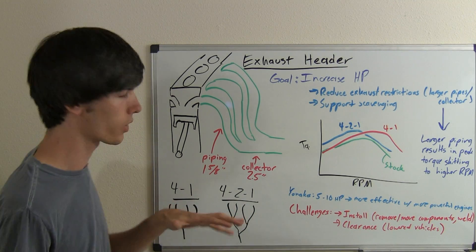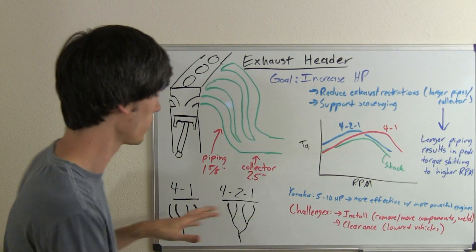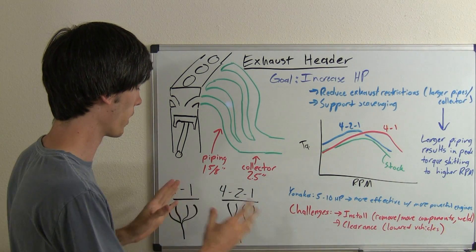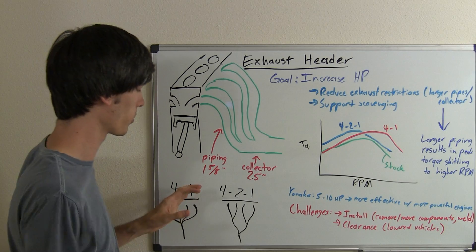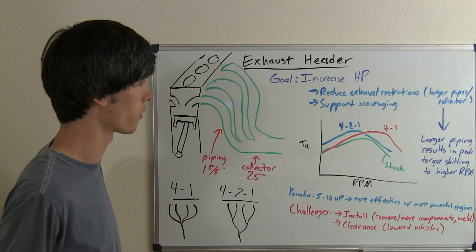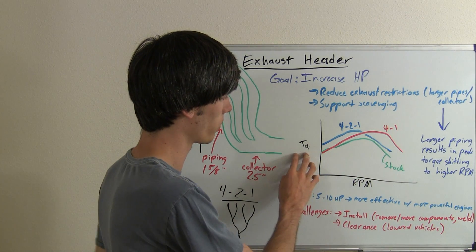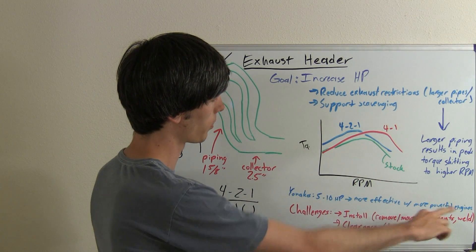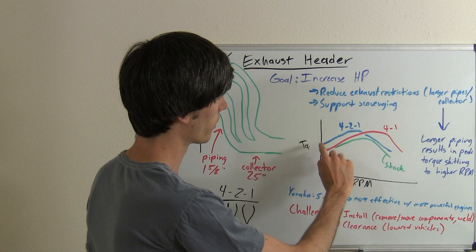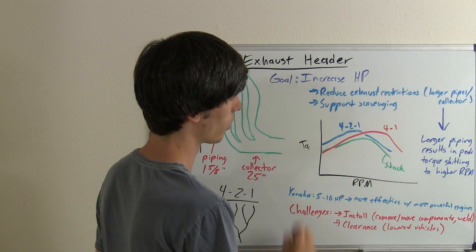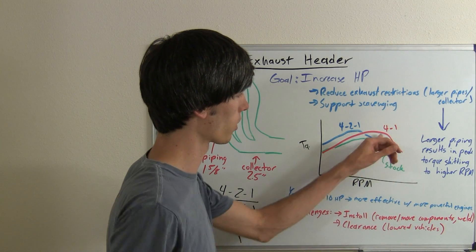I looked at some dyno charts online just to see some main differences here, and it doesn't look like there's a huge difference, but the power band is shifted a little bit higher with the 4-to-1 rather than the 4-to-2-to-1. This is a very exaggerated curve here, but basically if you have torque on one side and RPM on the other, the 4-to-2-to-1 header is going to have its peak torque at a little bit lower RPM than the 4-to-1 header.